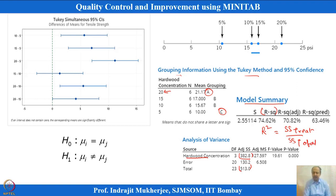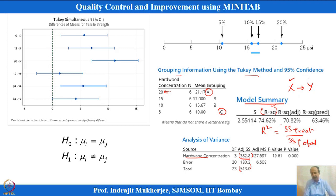R-squared explains how much of the variability of Y — the total data set collected during experimentation — is explained by the change in X. That is the fundamental concept behind R-squared. We are not talking about adjusted R-squared or predicted R-squared here; those will be discussed when we talk about regression analysis.